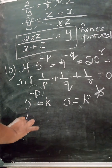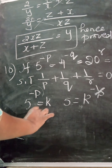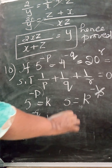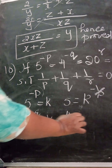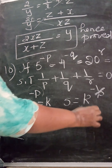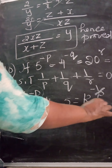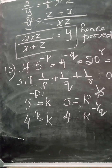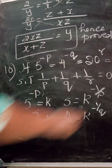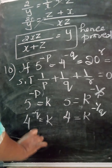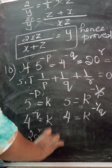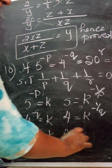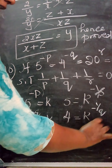Please understand this concept — if you understand it, then everything will become easy. So: 5 = k^(-1/p), 4 = k^(-1/q), 20 = k^(1/r). These are equations 1, 2, and 3 respectively.